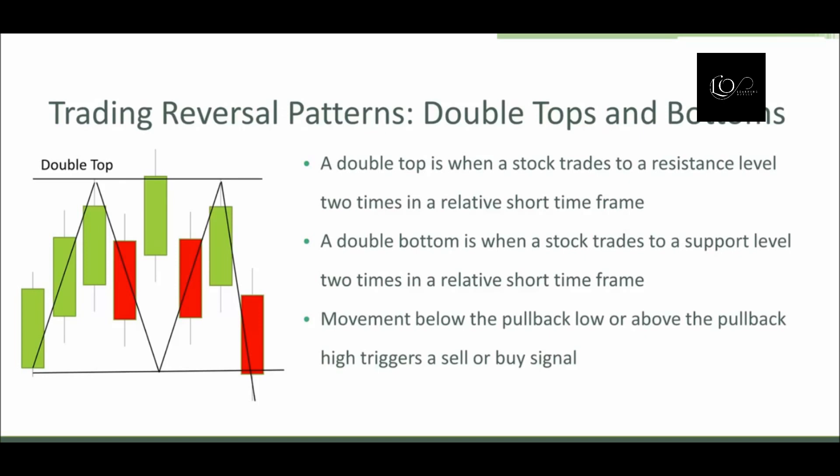As you can see from the graph on the left, we have the stock in an uptrend. It moves up to a resistance level, has a pullback to a pullback low, moves up a second time to the resistance level, and then pulls back and dives lower than the first pullback low. So basically with a double top you have sort of an M pattern, and with a double bottom you're going to have a W pattern.